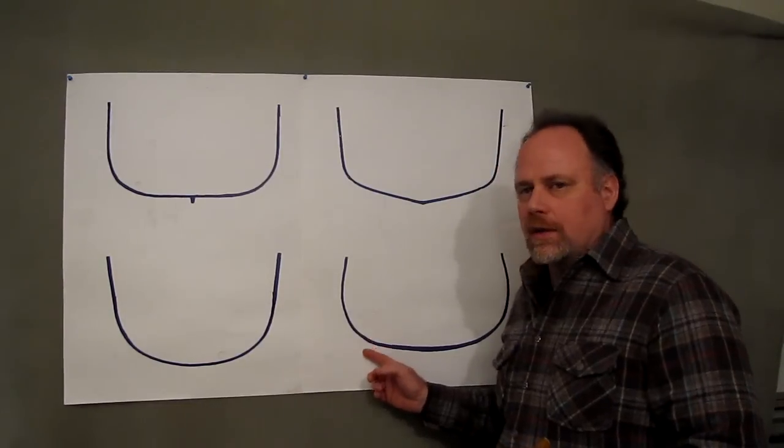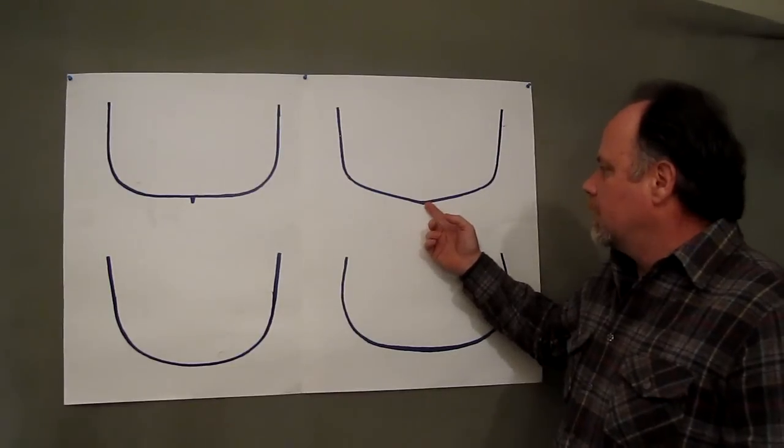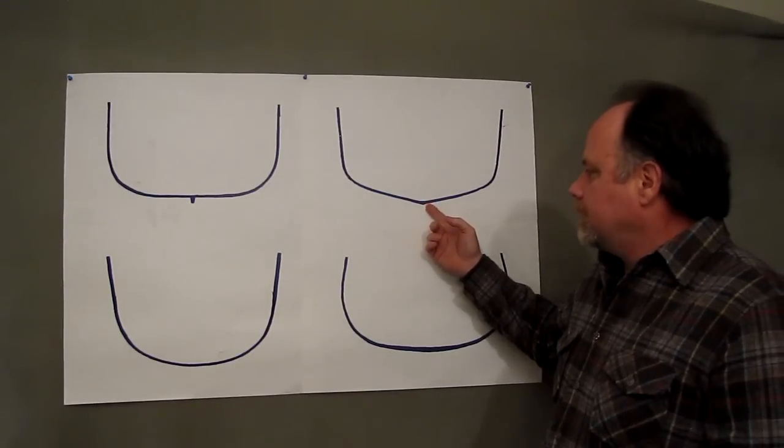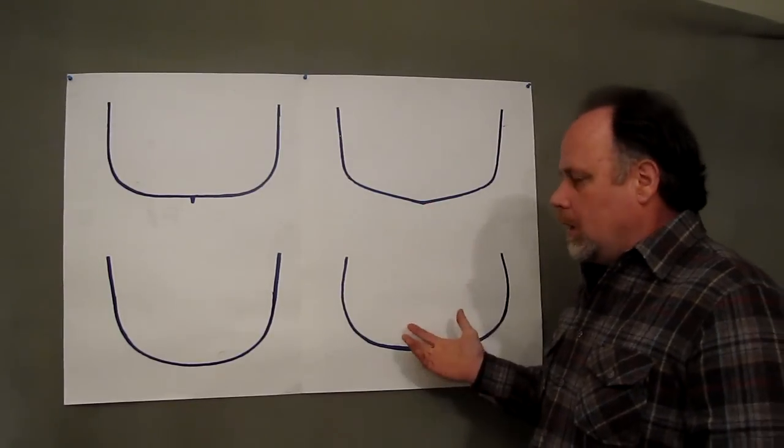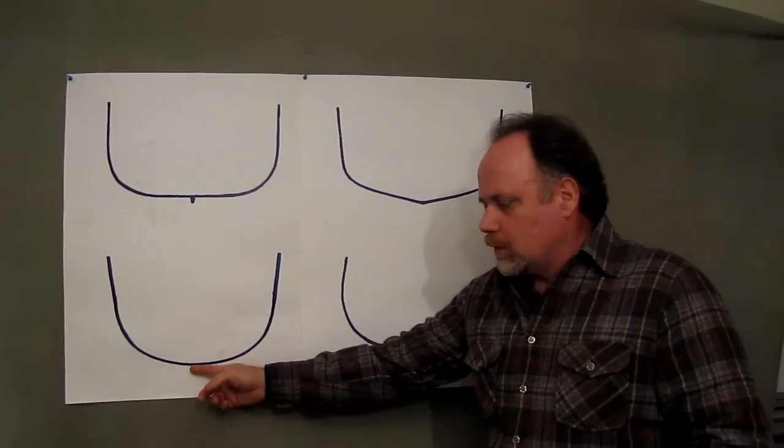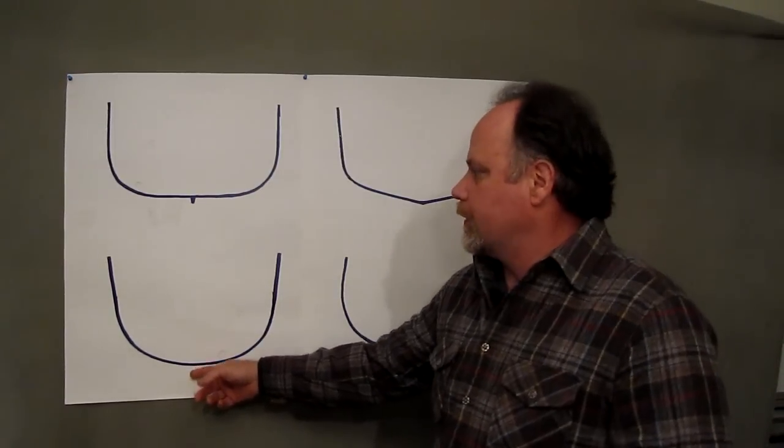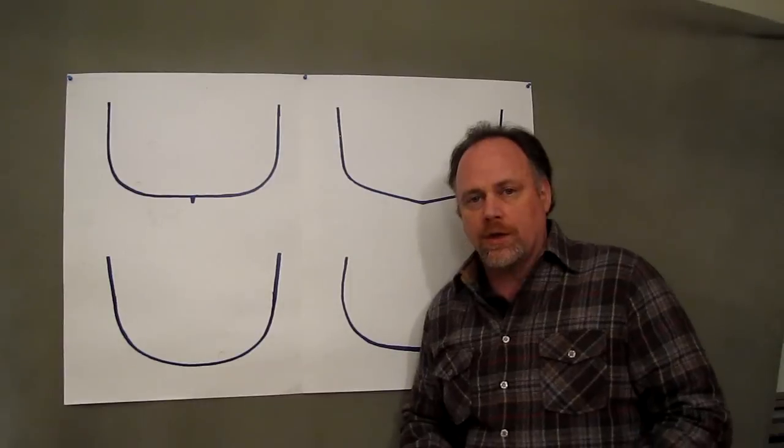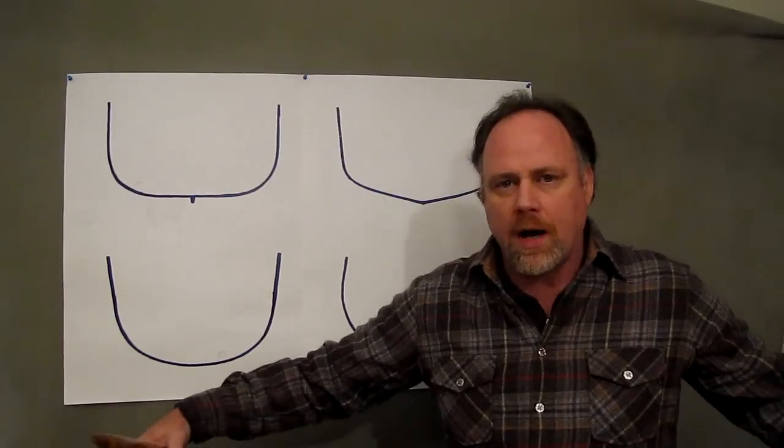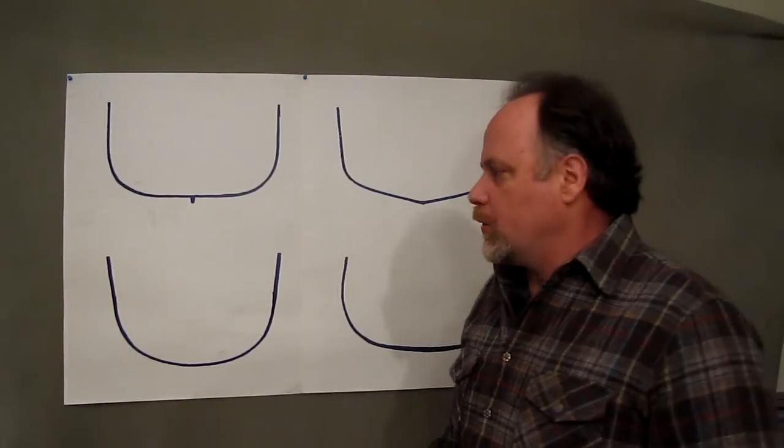The shallow arch has a little less wetted surface than the shallow V. The round bottom has less wetted surface than any of these boats. And the flat bottom has the most wetted surface. And as you make it wider, that wetted surface increases.